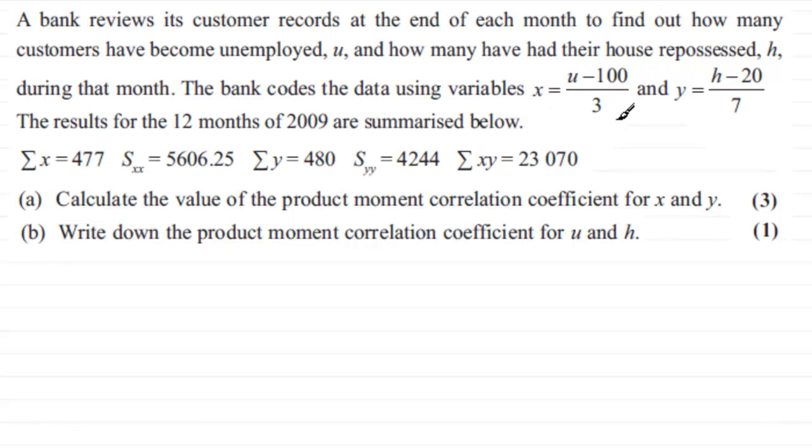The bank codes the data using variables x = (u-100)/3 and y = (h-20)/7. We've got the results for the 12 months of 2009 summarized below.